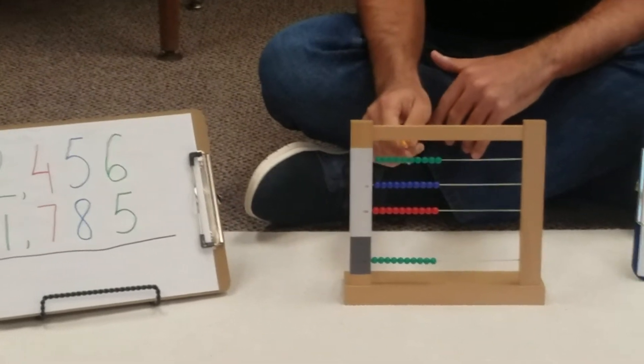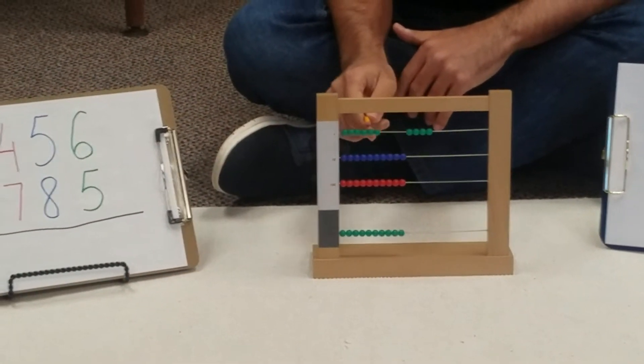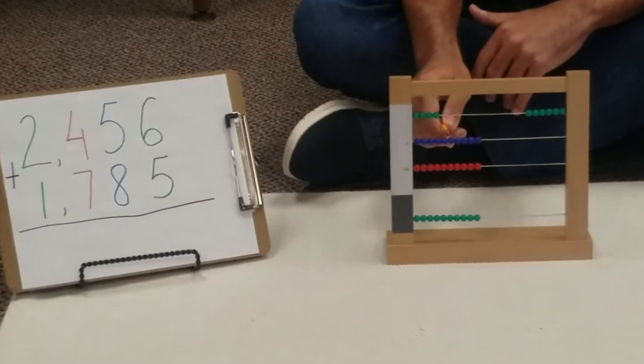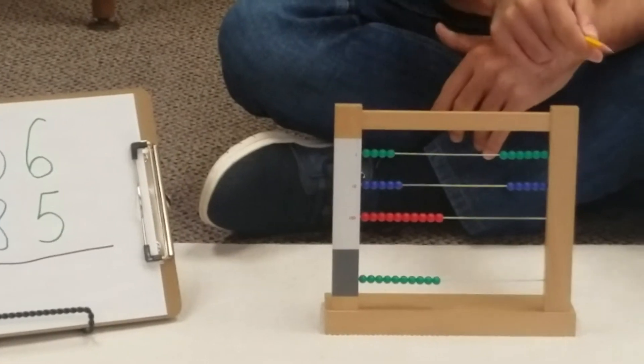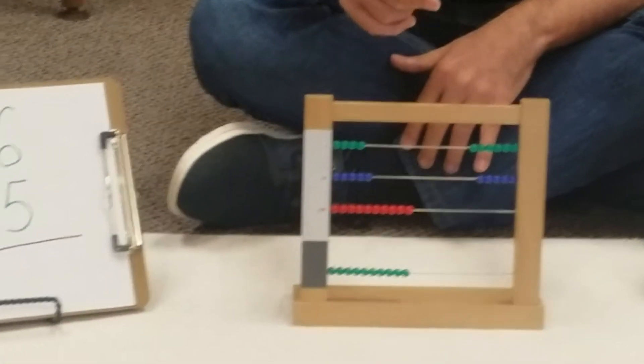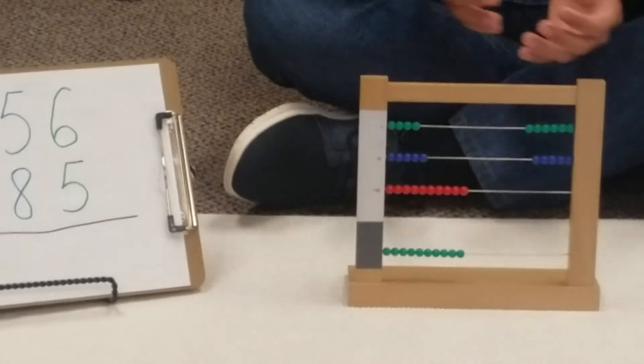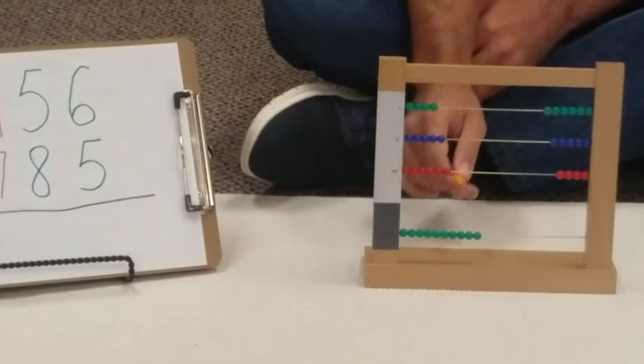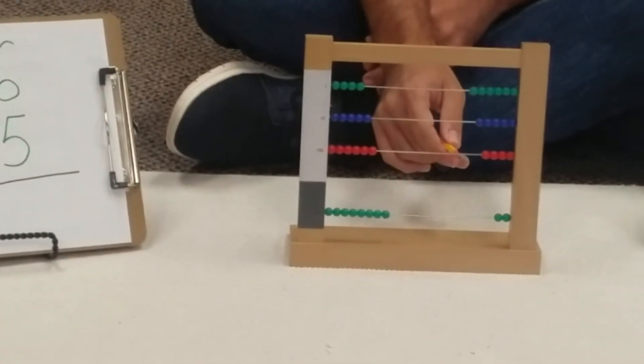We're going to start first with the units, like always. So we count 6 units, and we prepare the first addend. Then we have 5 tens. We go in the same way that we read a book, from left to right for the student. Then we have 4 hundreds, and finally 2 thousands. So we can see here the number 2,456.